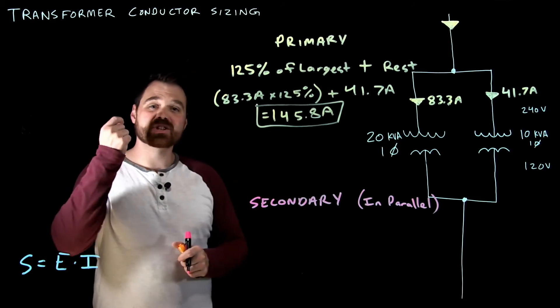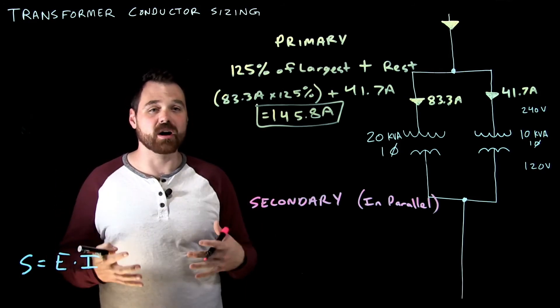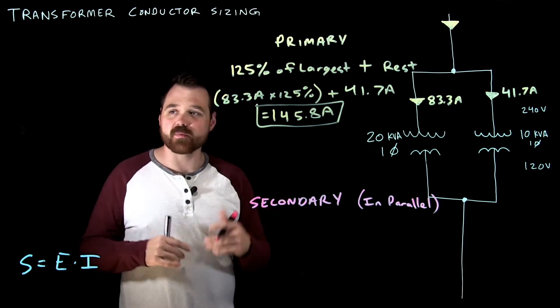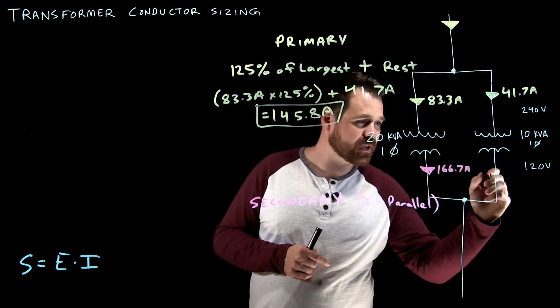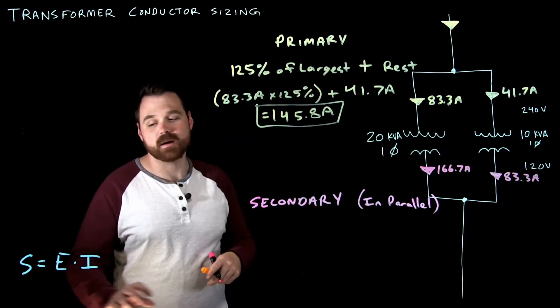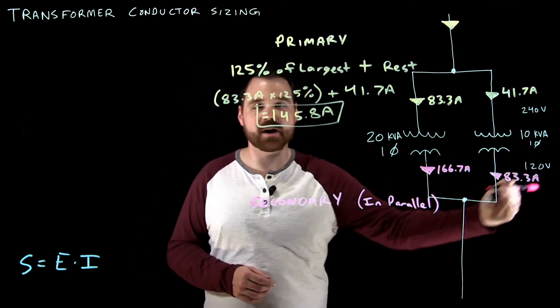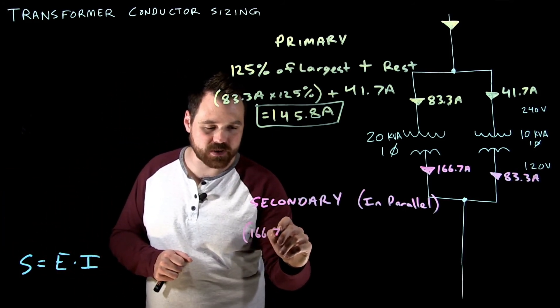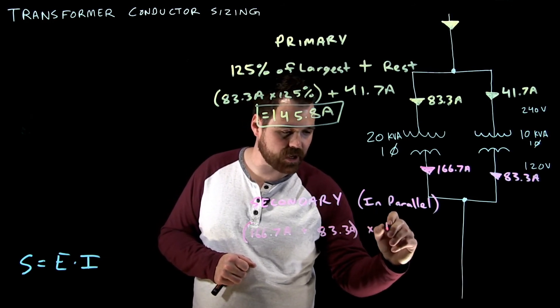What it tells us is it says it is the sum of all of the rated currents times 125%. This is 125% the sum of all the rated currents. So pretty straightforward. I'm going to figure out my rated currents based upon this formula. So my rated currents, I'm going to get 166.7 amps and 83.3 amps. So again, no root three, because we're just single phase. I'm just taking, you know, my two for 20 kVA divided by 120 volts, and my 10 kVA divided by 120 volts. So that gives me my rated currents. Now all I do is I add them all up. So 166.7 plus 83.3, and I multiply that by 125%.